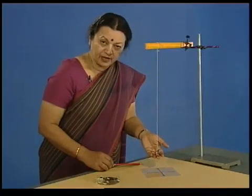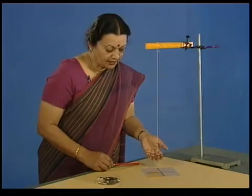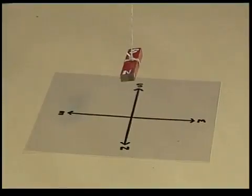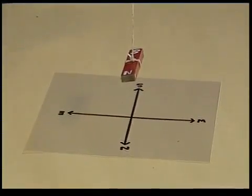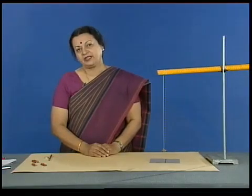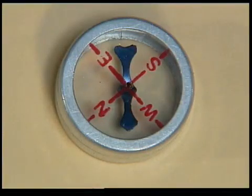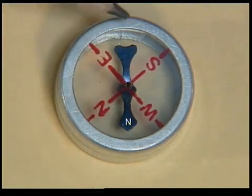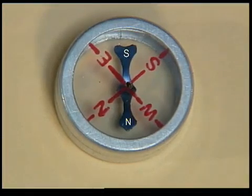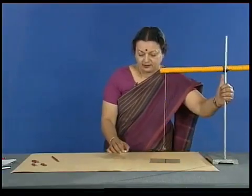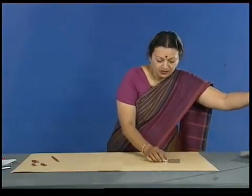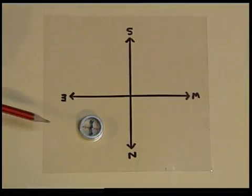If we slightly disturb this magnet, it would come back to its freely hanging approximately north-south direction. This property was used by travelers since the olden days to locate direction. A compass needle, which is a freely suspended magnet, was used by them. The tip of the needle is the north pole and the tail the south pole, with the tip pointing approximately in the north direction.